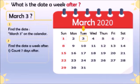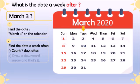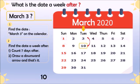The first way is that we count 7 days after: 1, 2, 3, 4, 5, 6, and 7. So the answer is 10. The easier second way is to draw a downward arrow from the date they gave us. So the answer is March 10.